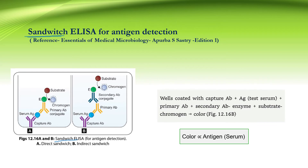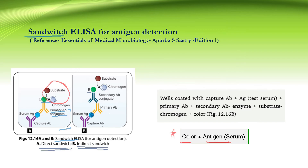Coming to sandwich ELISA, it is named so because the antigen is sandwiched between the capture antibody and the detector antibody. Direct sandwich ELISA uses the detector antibody as a primary antibody labelled with the enzyme, then the substrate chromogen system is added for colour development, and colour is directly proportional to the antigen present in the serum. In indirect sandwich ELISA, the enzyme is labelled with the secondary antibody, and after the addition of substrate chromogen system, colour development is again directly proportional to the antigen present in the patient serum.